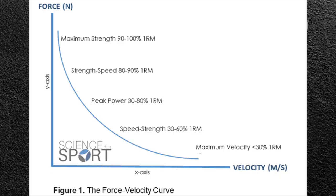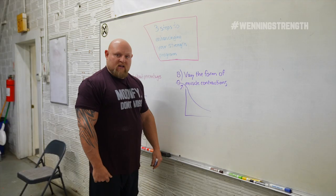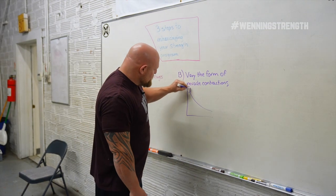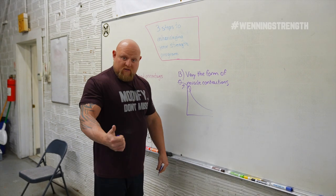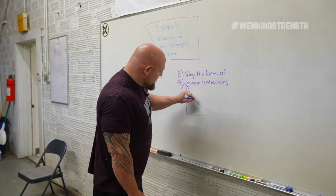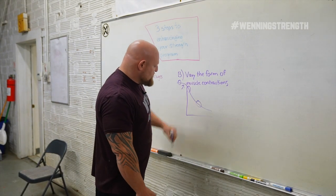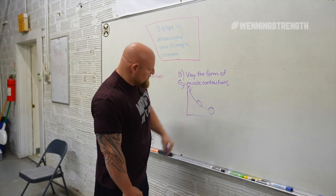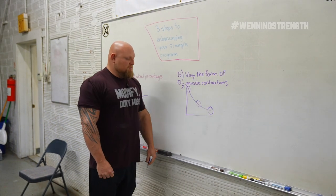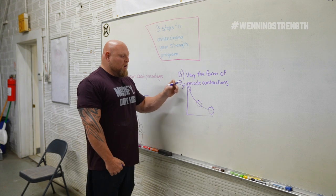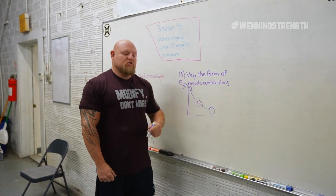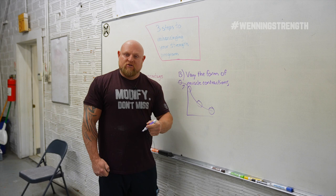And why that's important is the force-velocity curve. This force-velocity curve also applies on the eccentric side. So sometimes controlling the eccentric is going to give us some advantages. Sometimes training close to maximal effort is going to give us advantages. Sometimes training speed-strength or strength-speed is going to be an advantage. And sometimes doing plyometrics is going to be an advantage. So you need to train all forms of the force-velocity curve, and how you do that is you've got to vary the muscle contractions.